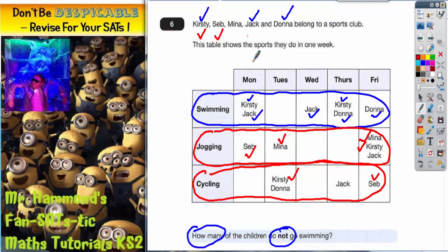Now for Jack. Jack is on the jogging row there. And he is also on the cycling row there. So Jack definitely does both of them. So I can tick him.